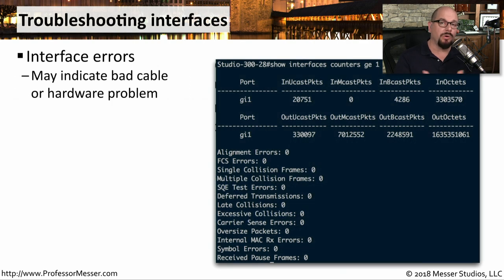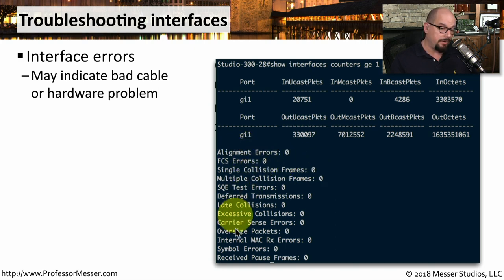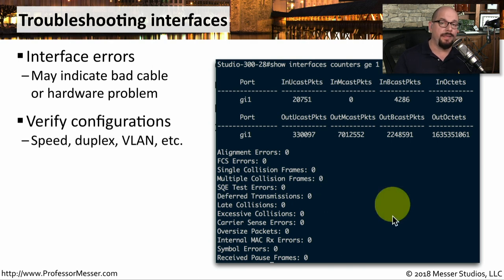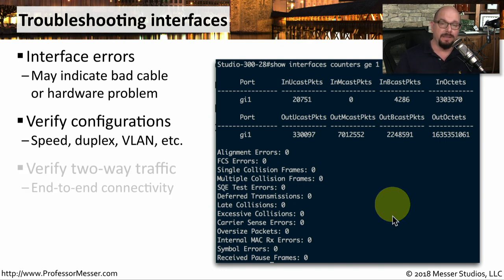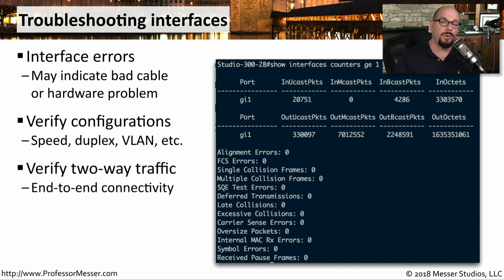If you're having problems with a cable or fiber and you think there's an issue with the physical layer, you'll see errors appear on the interface connected to that cable. For example, you can look at your interface and see if there are any frame check sequence errors, oversized packets, or late collisions — those might give you an idea that something is happening with that physical layer. You might also want to look at the ethernet adapter configurations on both sides of the connection and make sure the speed and the duplex match. And then it's very common to send traffic back and forth between those devices to see if any of these physical-level errors increase as more traffic is sent.